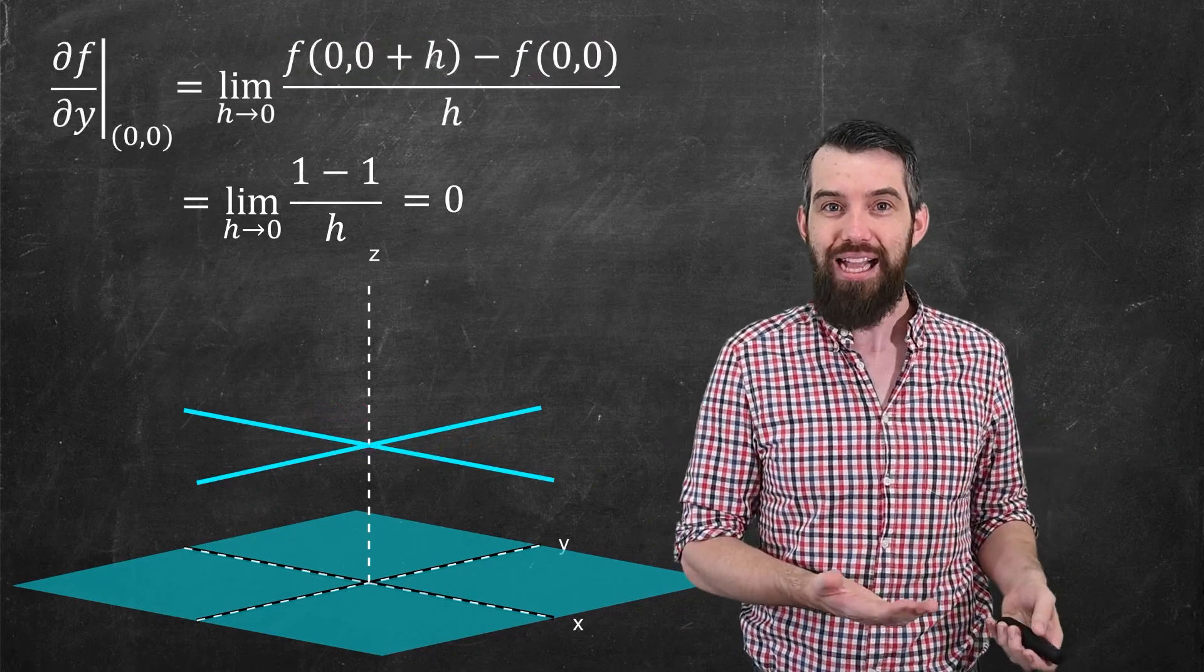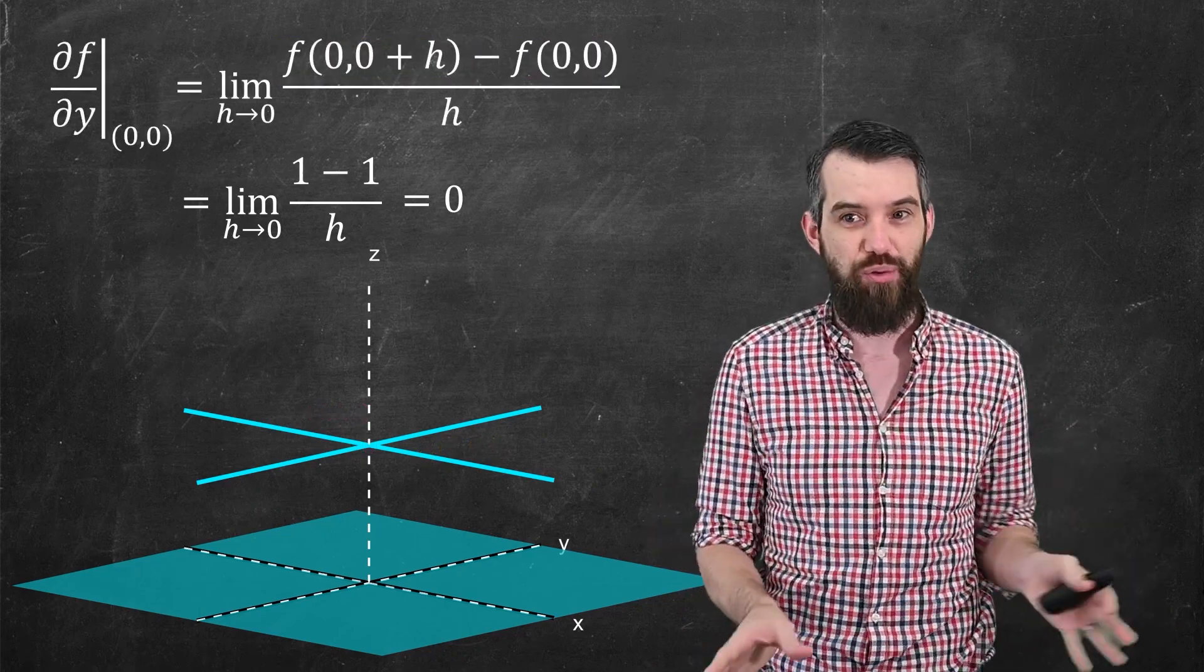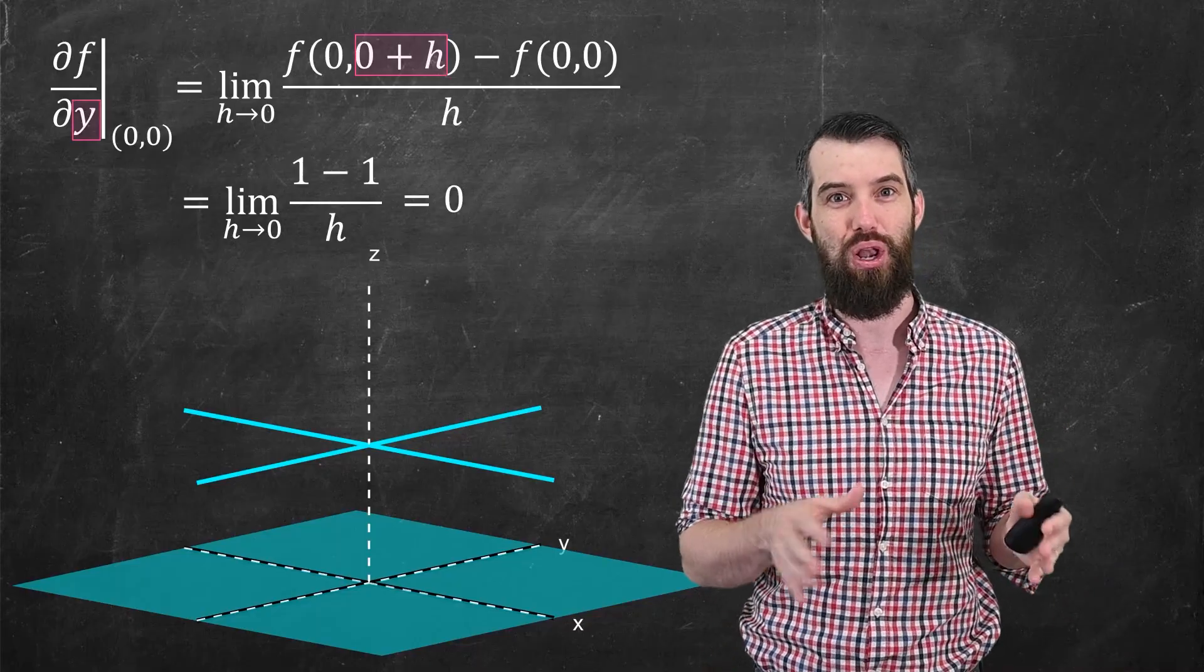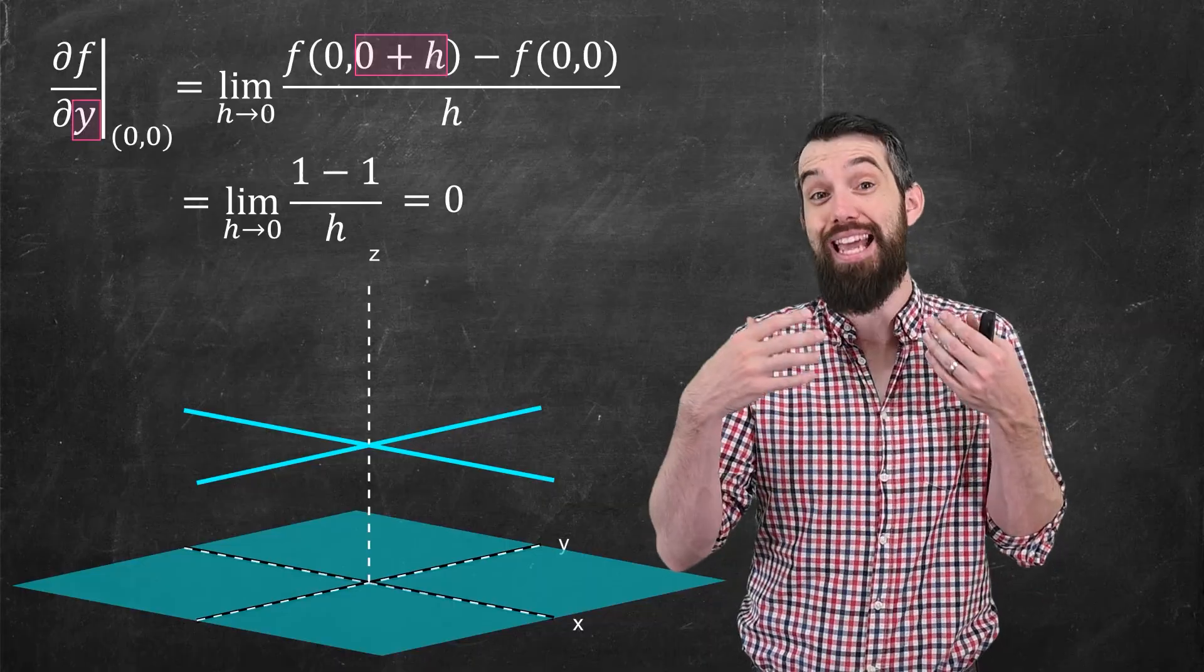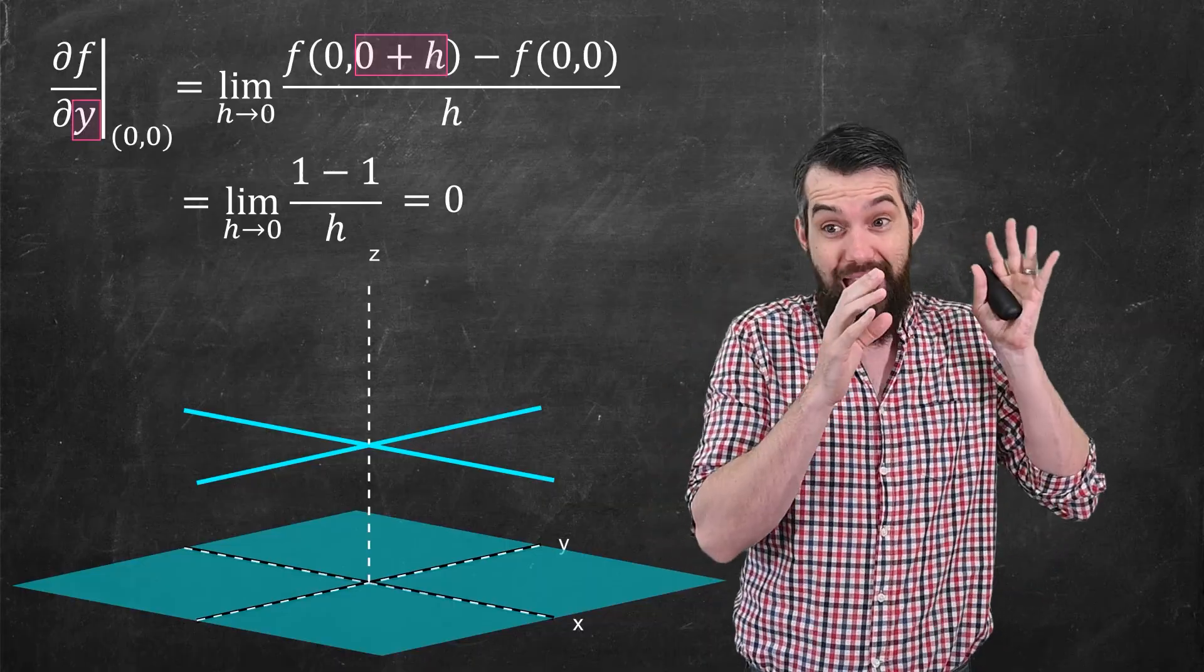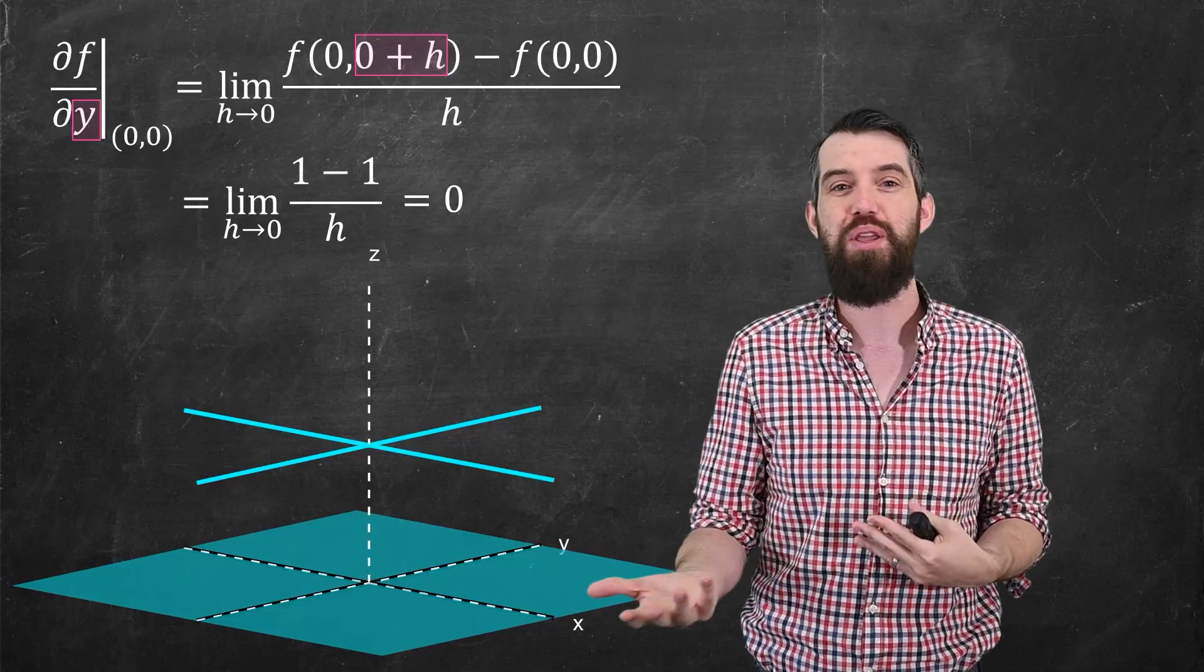Okay, that's the partial derivative with respect to x. The same argument applies for the partial derivative with respect to y. Nothing really changes except for the location of the h. So now the location of the h is in the y component. It's the x component that's fixed at 0, and the y that's got that 0 plus h. But by the same argument, it's 1 minus 1.